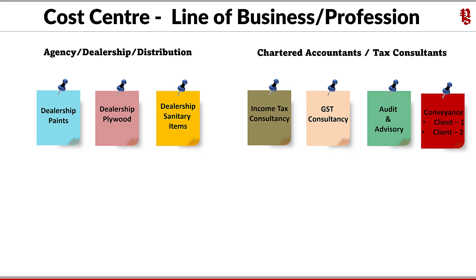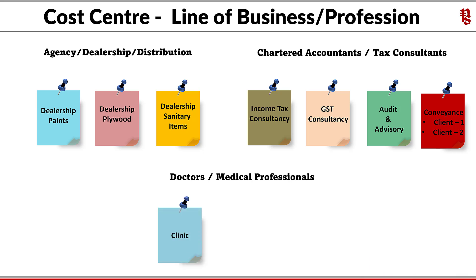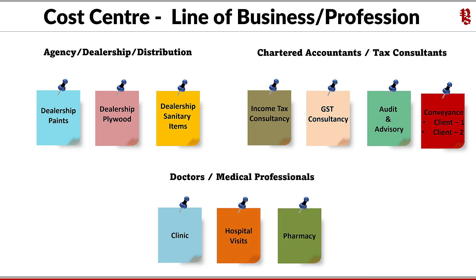The next segment — if we consider doctors or medical professionals, the indicative cost centers could be clinic income, hospital visit income, and pharmacy income.